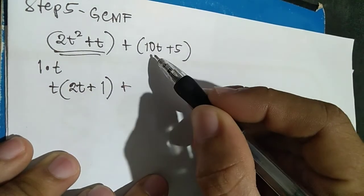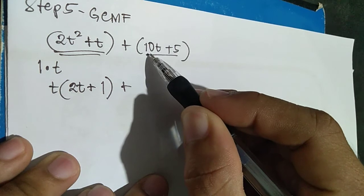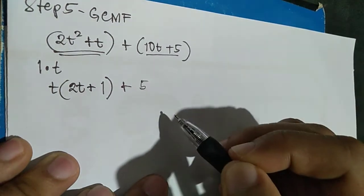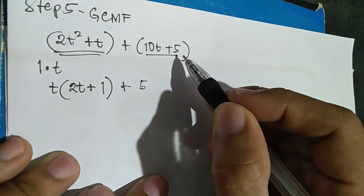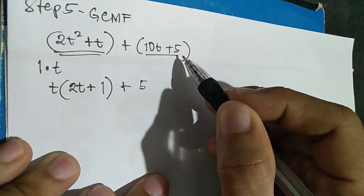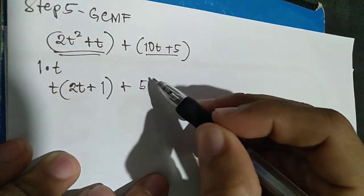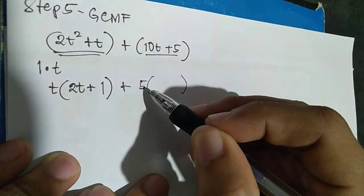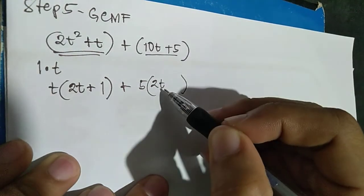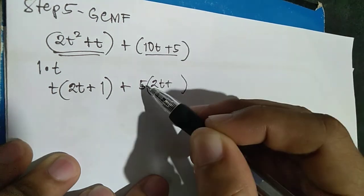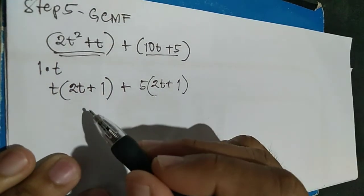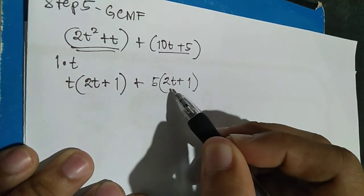For the second binomial, find the GCF of 10T and 5. The GCF of 10 and 5 is 5. There is no common variable since 5 has no variable. So GCF equals 5. Dividing: 10T divided by 5 is 2T, and 5 divided by 5 is 1. Therefore the second group factors as 5 times the quantity 2T plus 1.